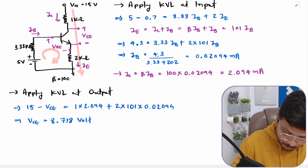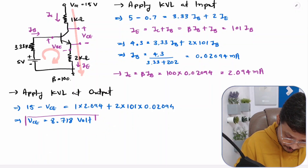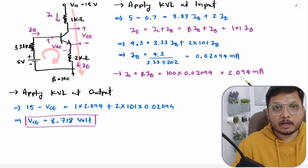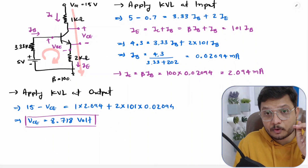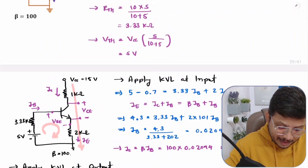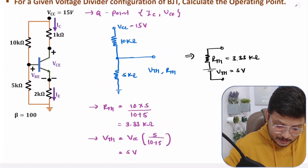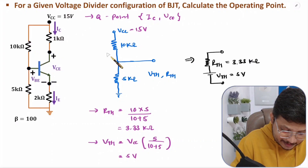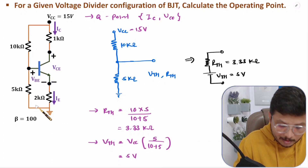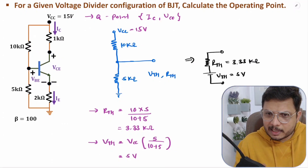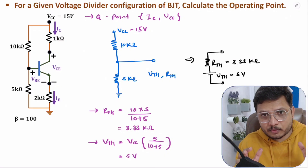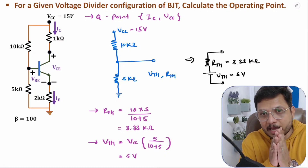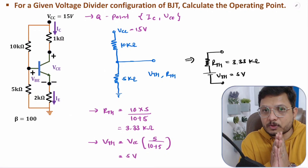That is how one can find the output voltage and output current — the operating point. When calculating the operating point for voltage divider bias, first convert R1 and R2 into the Thevenin equivalent model to simplify the circuit, then solve using KVL. I hope you have understood everything. If you have any questions please note them in the comment section — I will be happy to help. Thank you so much for watching.